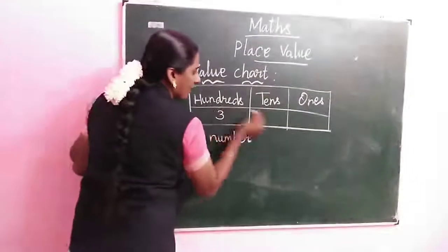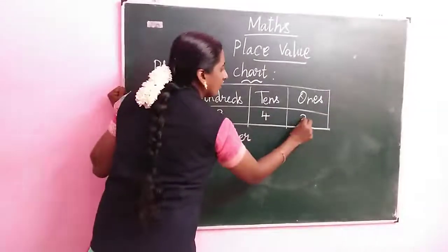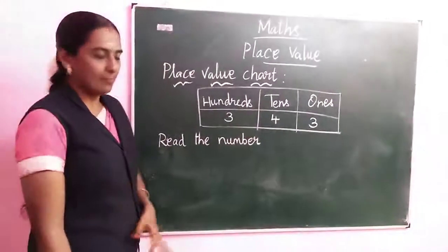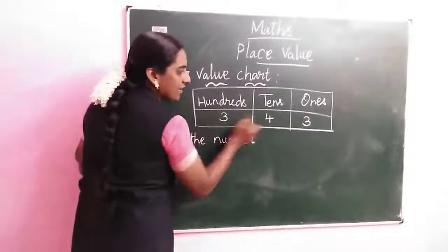So I will give you some number: 3, 4, 3. Now how to read this number? Listen. 3, 4, 3. We are taught the highest place value.